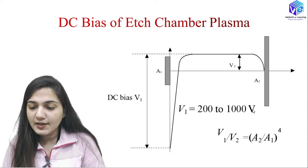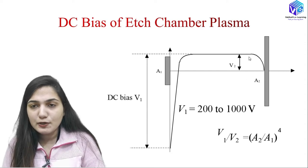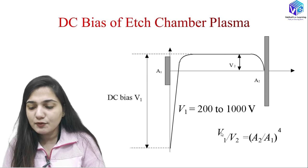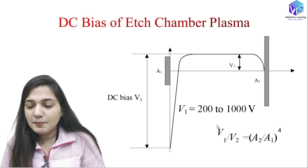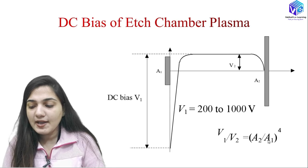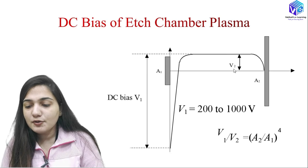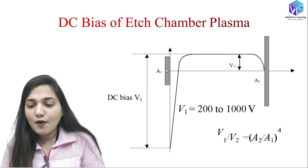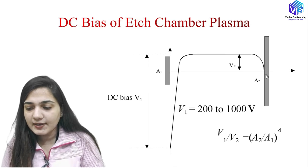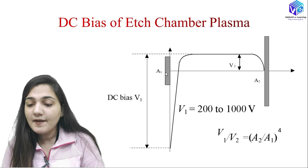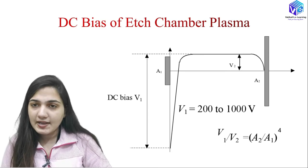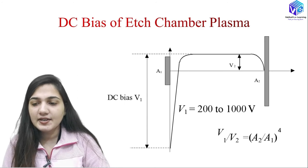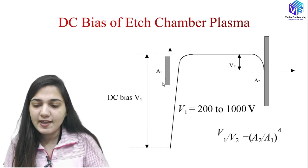The DC bias can be negative as well. V1 is around 200 to 1000 volts and V2 is some positive value around 10 to 20 volts. The ion energy is proportional to V1/V2, which equals (A2/A1) raised to the power of 4, where A1 and A2 are the areas of the two electrodes. If I reduce the area A1, I can have a high V1/V2 value, which means high ion energy. So to increase ion energy, I need to control the area of electrode A1.